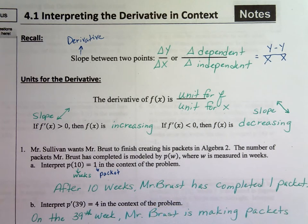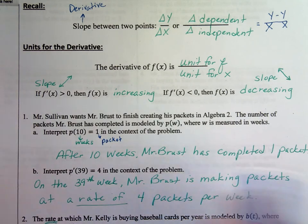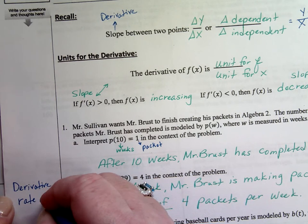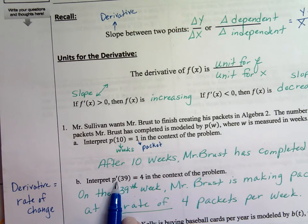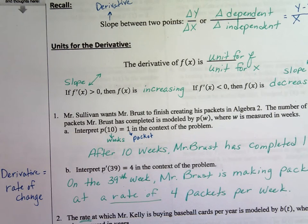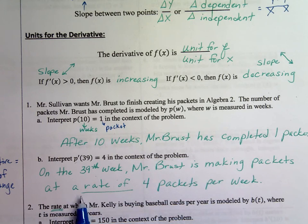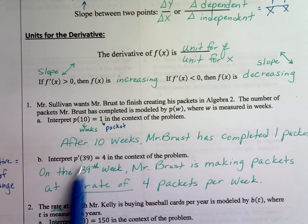So if I go to the second piece here, 1b, now interpret p'(39) = 4. Well, p prime is a rate of change. It's a derivative. Derivatives are a rate of change. Maybe we want to put that in the margin: derivative equals a rate of change. And they're exactly the words that you want to use when you see these. So because this one's a derivative, the derivative is some kind of rate of change. What's the rate that he's making these packets? The 39 still represents the weeks, and the 4 represents the packets. So what does this mean? On the 39th week, Mr. Bruce is making packets at a rate of, you need to literally use those words, at a rate of 4 packets per week. So this one is a rate of change, a derivative, a first derivative type thing. This was the original function. This is now the derivative, which is a rate of change.